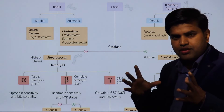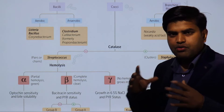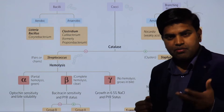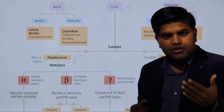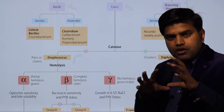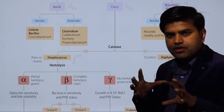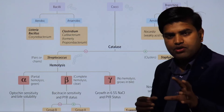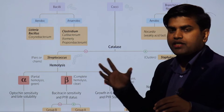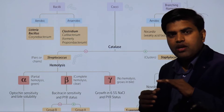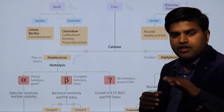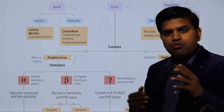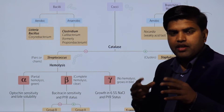Gram stain is a procedure developed by scientist Gram, and it is able to differentiate two different types of bacteria — it is also known as a differential stain. Gram positive bacteria appear purple or blue in color, gram negative appear pink. Initially, we apply a primary stain known as crystal violet, then in the next step we apply iodine as a mordant.